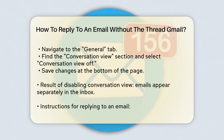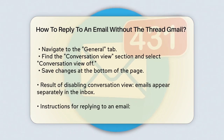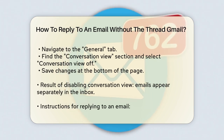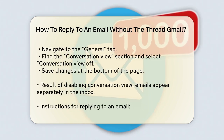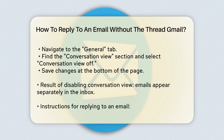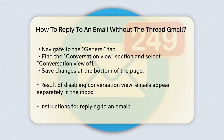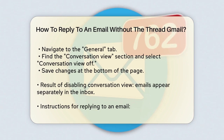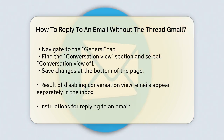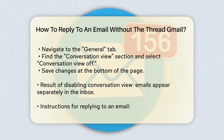Here's how you can disable the conversation view. Open Gmail in your browser. Click the gear icon in the top right corner and select See All Settings. Go to the General tab. Scroll down to the Conversation View section and select Conversation View Off. Click Save Changes at the bottom of the page.